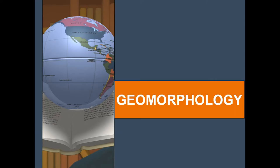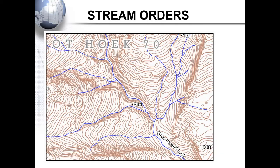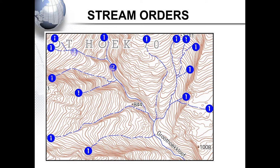Geomorphology. Grade 12s, in your map work paper we can ask you about the different stream orders. Remember, two first-order streams when they meet become second-order streams. Two second-order streams become a third order, and two third-order streams become a fourth order.